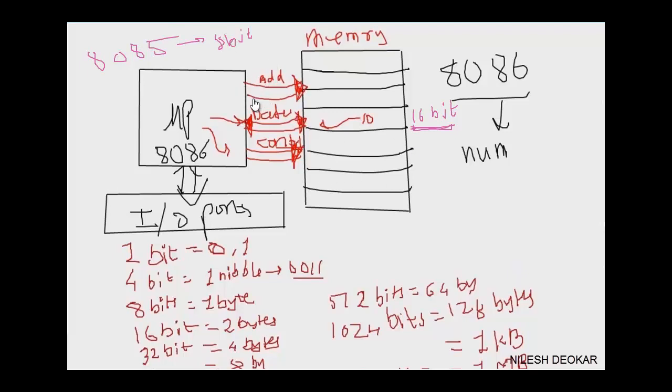Now address bus. Address bus of 8086 is of 20 bits. It was having a memory of 1 MB. There was a special reason behind keeping address bus as 20 bit. We'll see what it was.